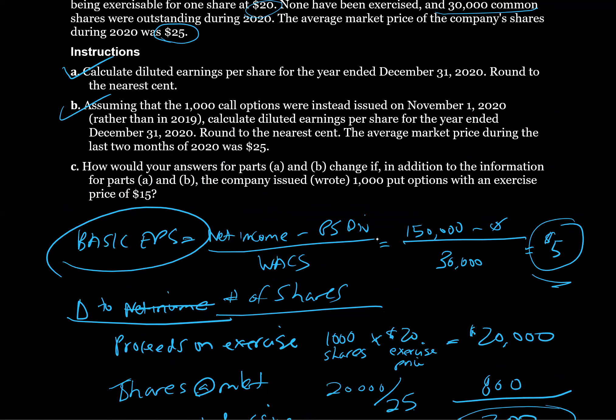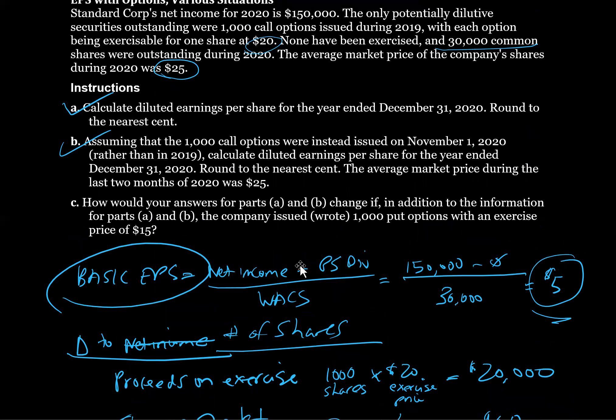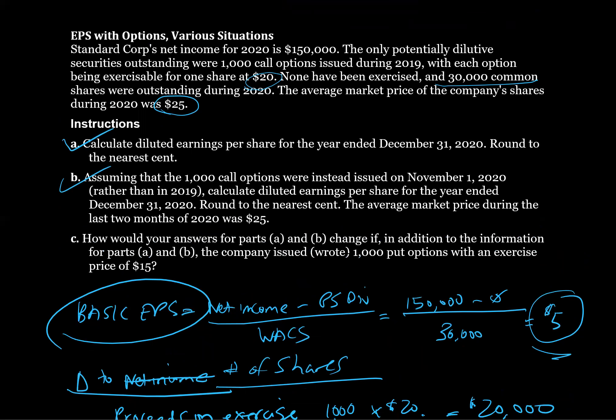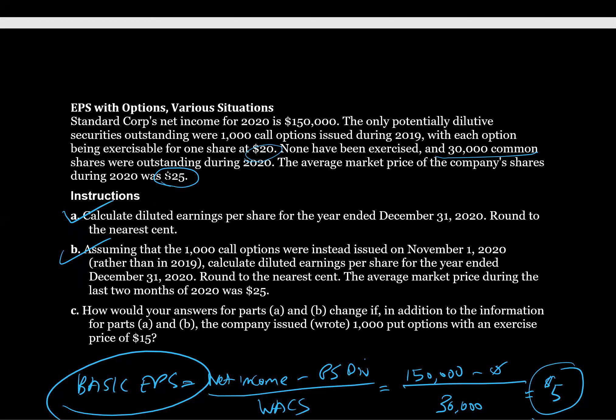Part C asks how answers for Parts A and B would change if the company also issued 1,000 put options with an exercise price of $15. With an exercise price of $15 and a market price of $25, these options are not in the money. Who would agree to buy stock at $15 when they could buy it in the market at $25? Therefore, these put options would be excluded from the calculation of diluted earnings per share, as it's not reasonable to assume anyone would exercise them. The answers for Parts A and B would not change.